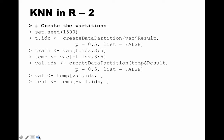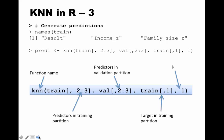The next job is to generate predictions with k=1, k=3, and k=5, then for each option generate the error matrix and see which gives the best results. We check names(train) and confirm we retained only the target variable and the two normalized variables: result, income_z, and family_size_z. We store predictions for k=1 in pred1 using the knn function.